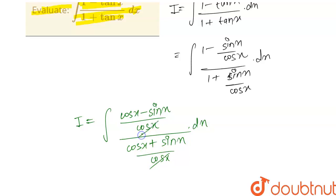Now here cos x will cancel out cos x. Then our i becomes equal to integration of cos x minus sin x divided by cos x plus sin x dot dx.